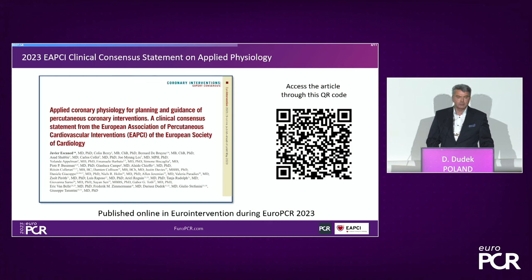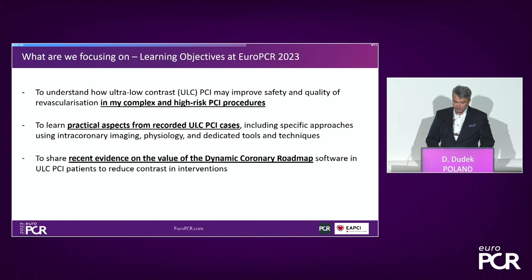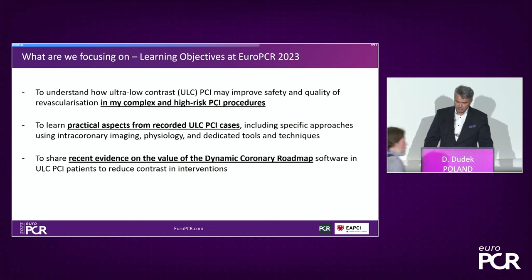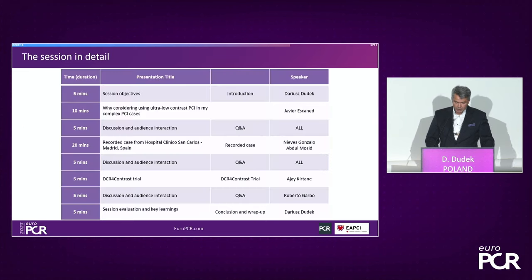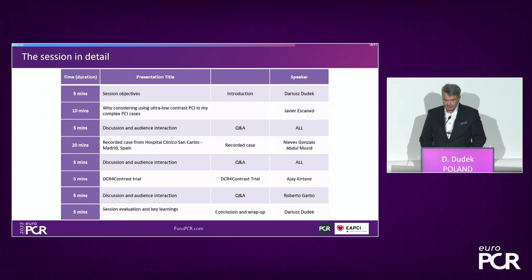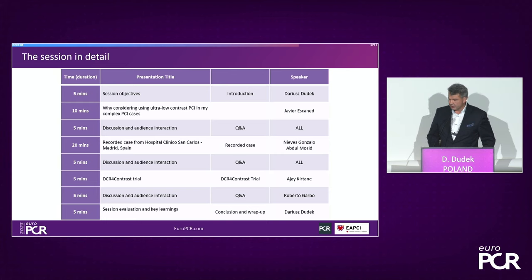Physiology is also important for everyday practice in interventional cardiology. Today we want to discuss how we can improve the safety and quality of revascularization in complex and high-risk PCI procedures. We can learn practical aspects from recorded cases on ultra-low contrast PCI, seeing specific approaches with imaging, physiology, and a dedicated toolbox — not just one, but many tools. In the second part of this workshop, we'll hear about new randomized clinical data with technology that can also save contrast for patients.